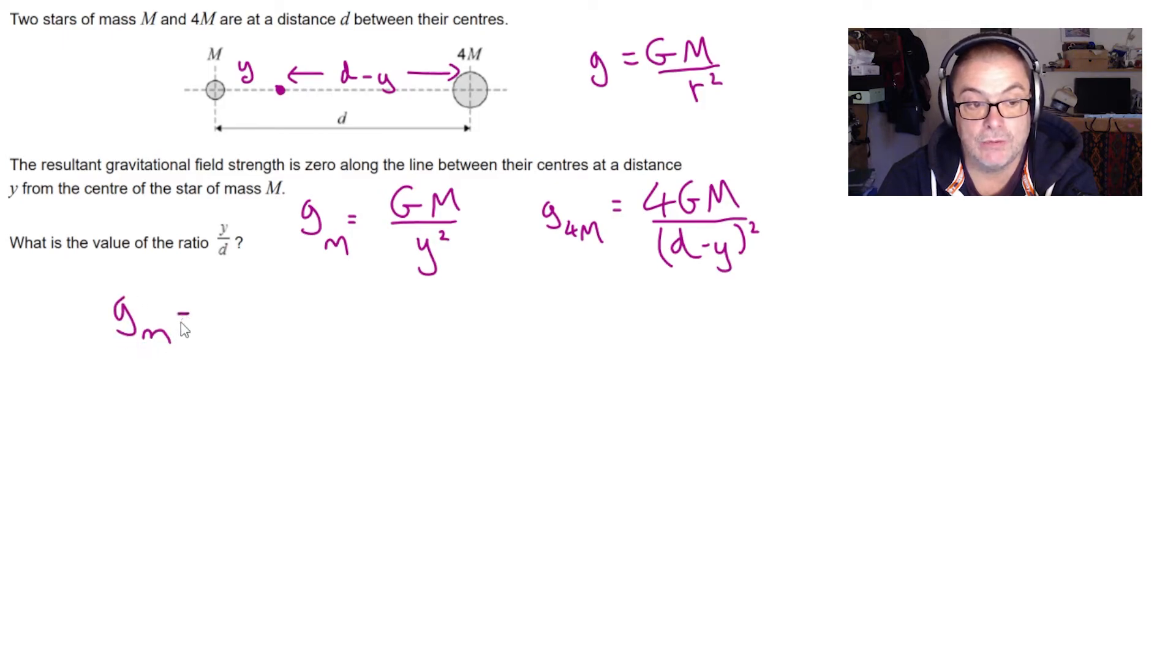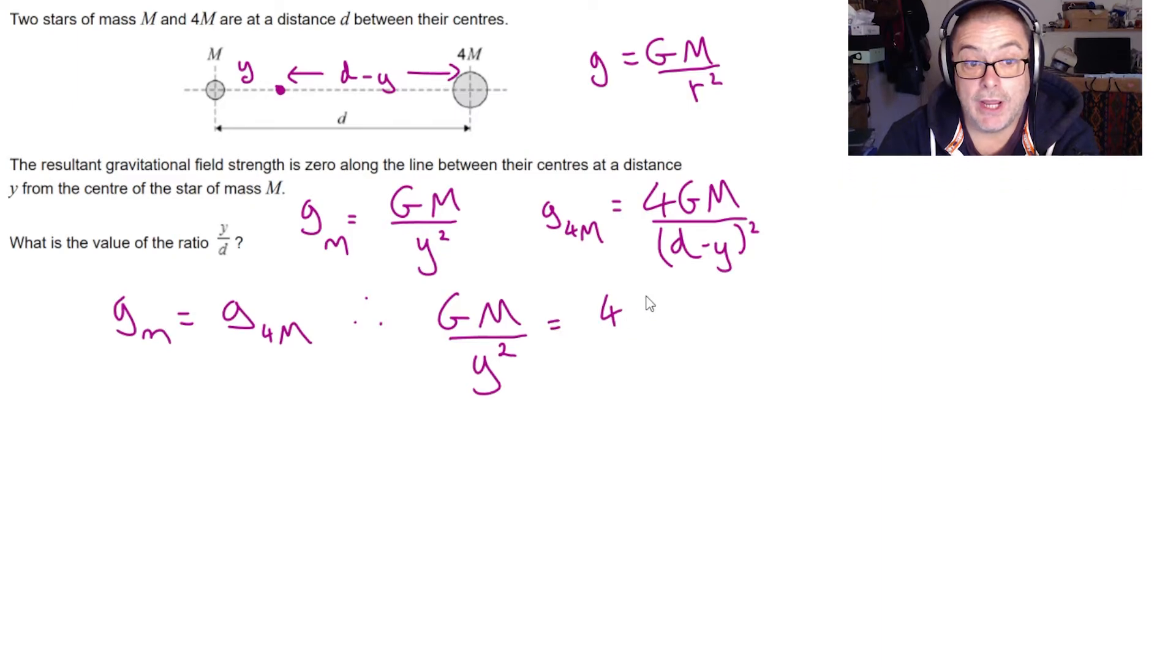So let's set them equal. That's going to mean that g m over y squared is equal to 4 g m over d minus y all squared.